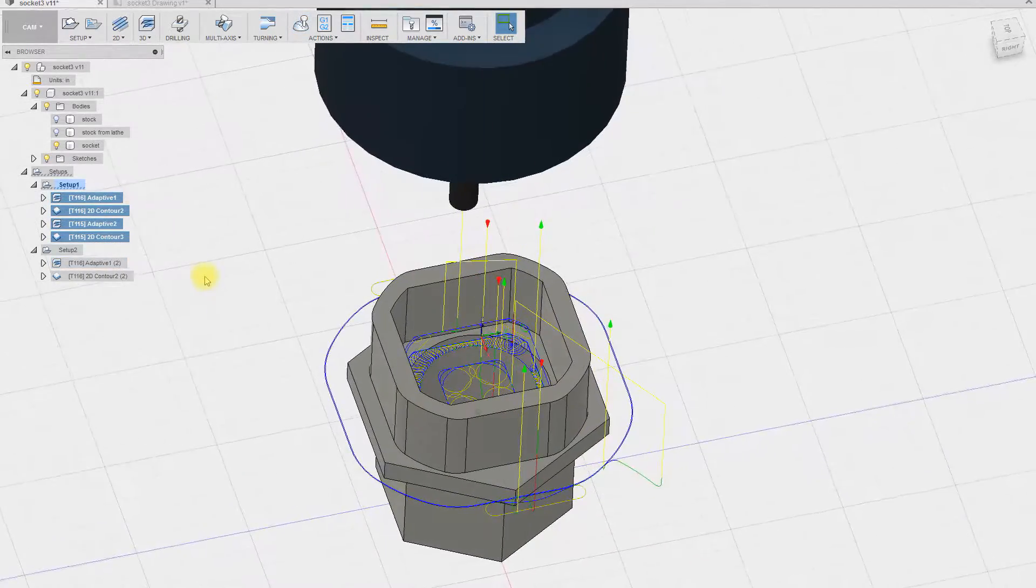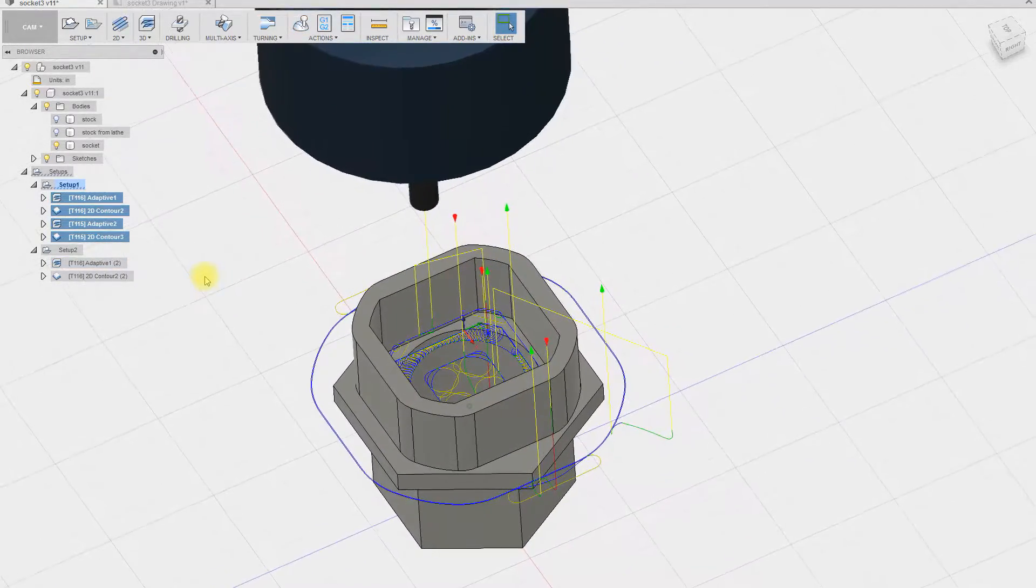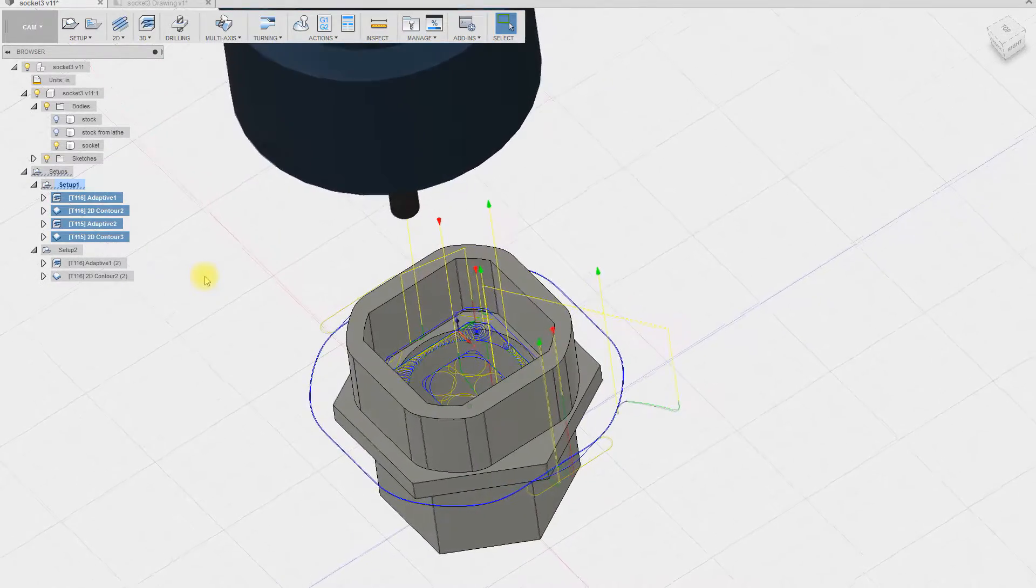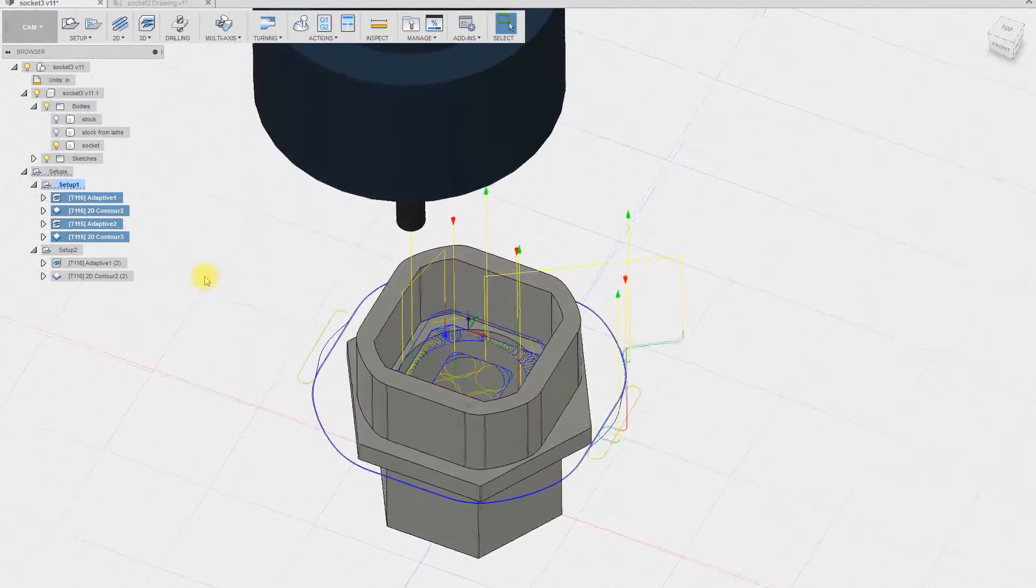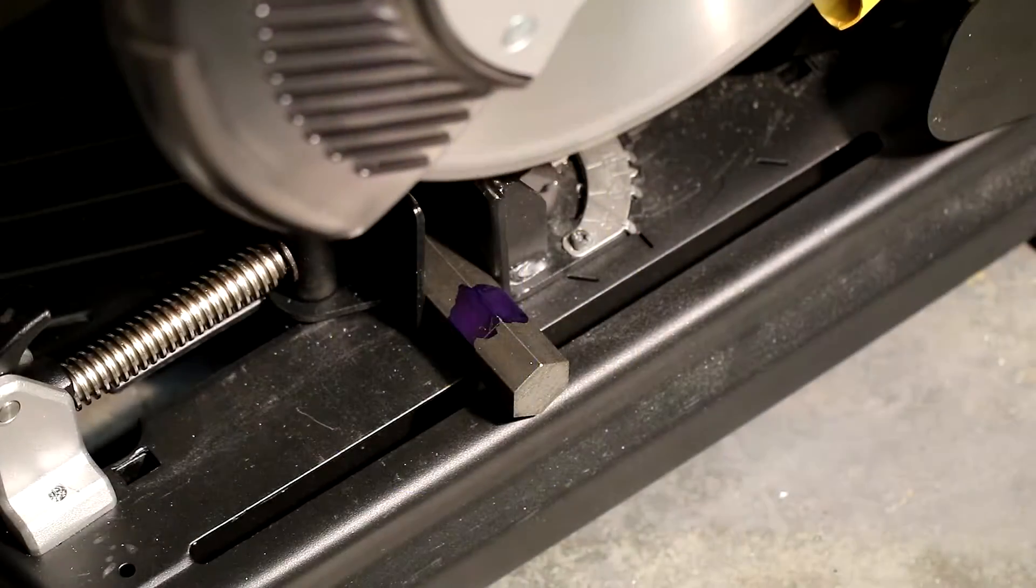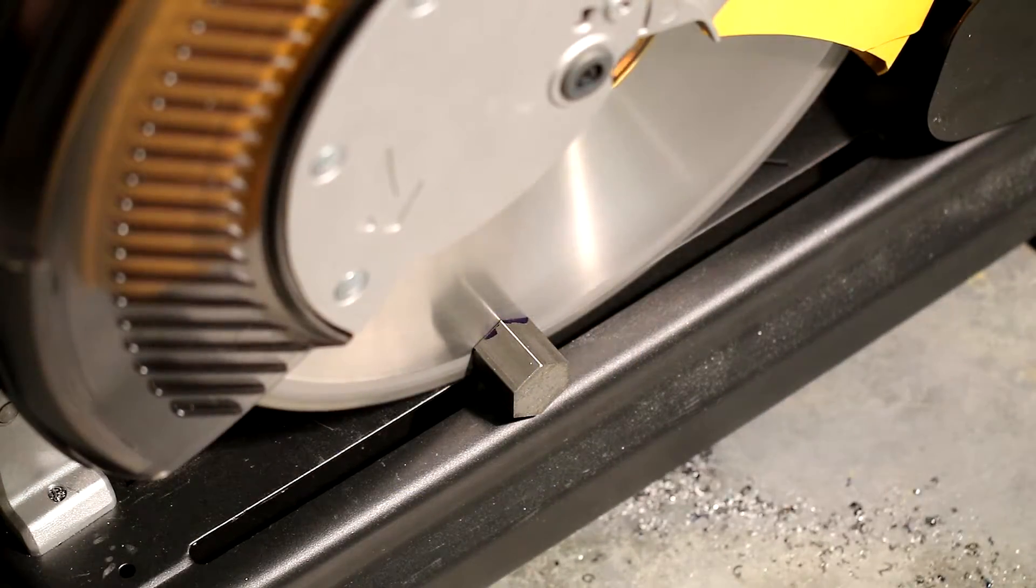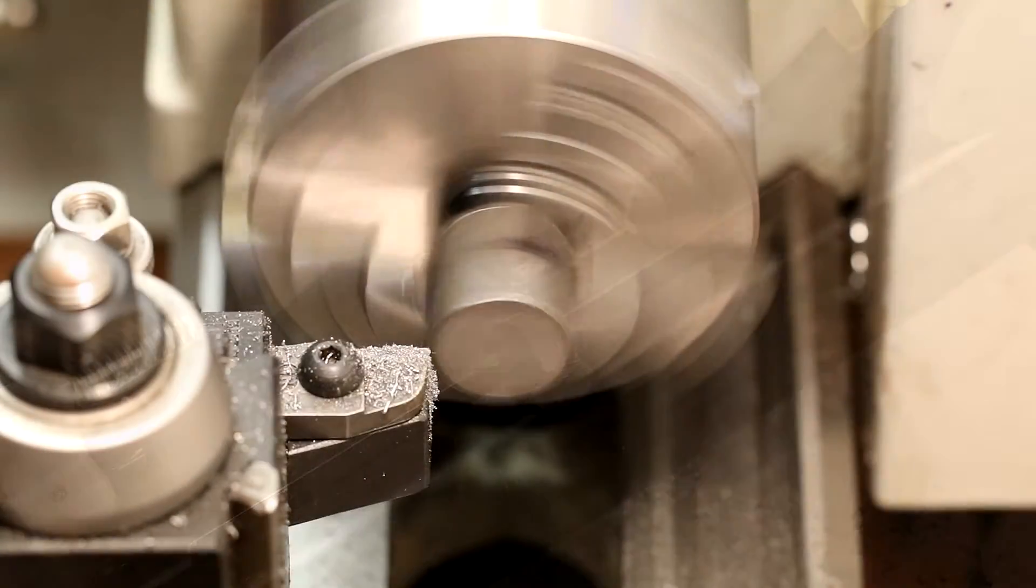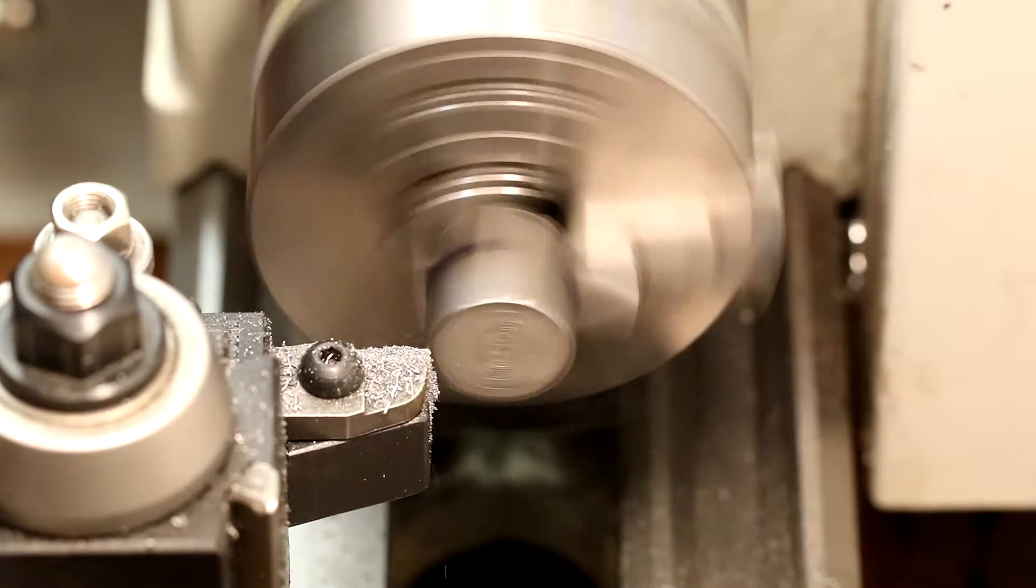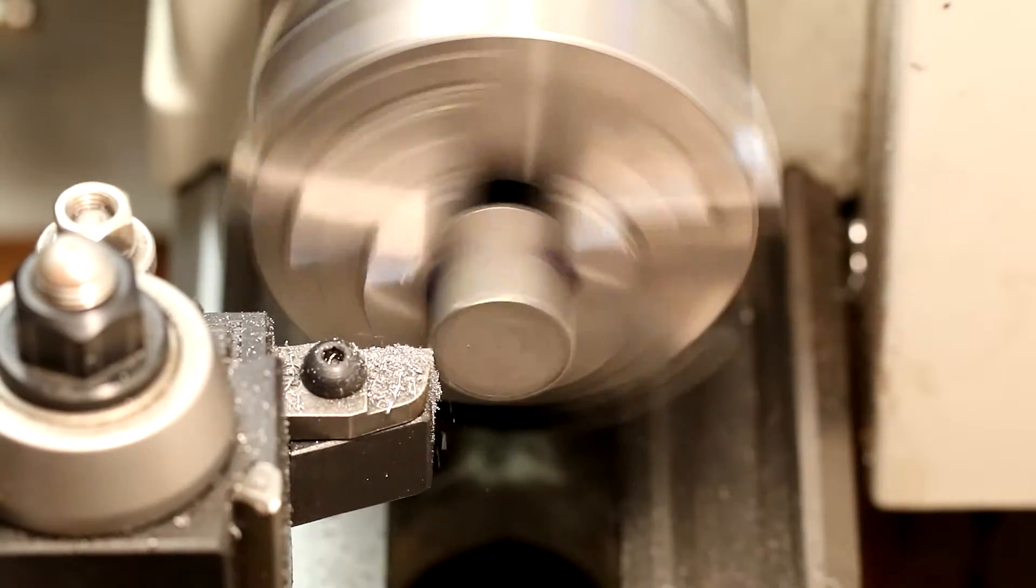We'll now export the tool paths to Linux CNC and the CNC machine will make the custom tool for us almost entirely by itself and that's really amazing. The stock we're using is 1 inch hex 1215 steel. McMaster calls 1215 very easy to machine steel and it certainly is easier to machine than 1045 that I previously used on the drawbar.